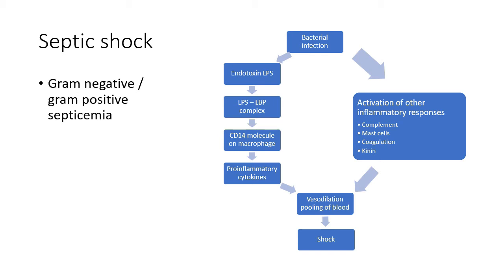This stimulates monocytes and macrophages to elaborate pro-inflammatory cytokines like TNF-alpha and IL-1. These cytokines, by altering endothelial cell adhesiveness and promoting nitric oxide synthesis, cause vasodilation and consequent peripheral pooling of blood. This widespread vasodilation and pooling can also be caused by activation of other inflammatory responses.